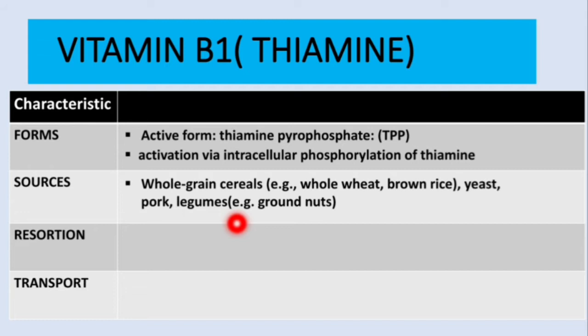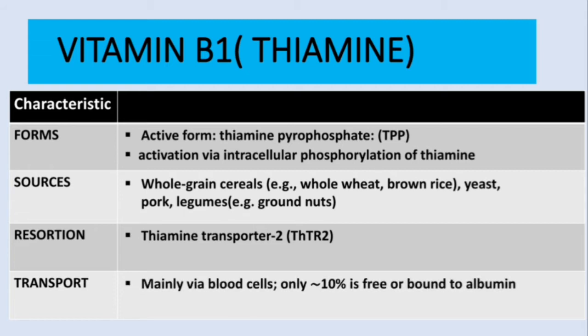For resorption, there are specific channels for thiamine called thiamine transporters. Thiamine transporter 2, also known as THTR2, is the main channel. For transport in blood, this is mainly via blood cells.